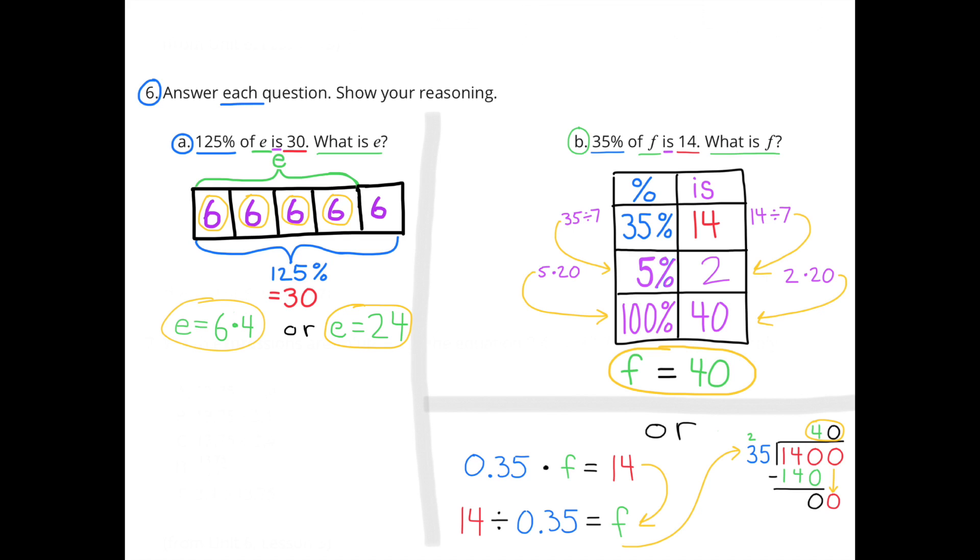And 5% times 20 gives me 100% of F. Now I have to perform those operations on the right-hand column. So 14 divided by 7 equals 2, and then 2 times 20 equals 40. So now I know 100% of F equals 40, or F equals 40.